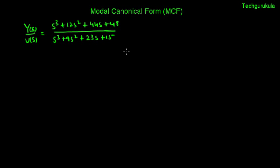Given a transfer function, how to represent that system in modal canonical form — that's what we're going to do in this video. For this example transfer function, the numerator polynomial order m is 3 and the denominator polynomial order is also 3.